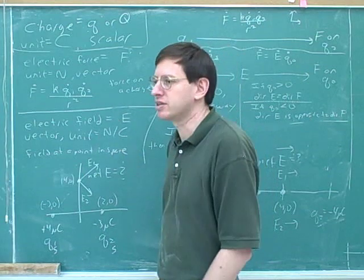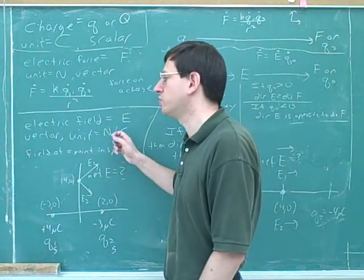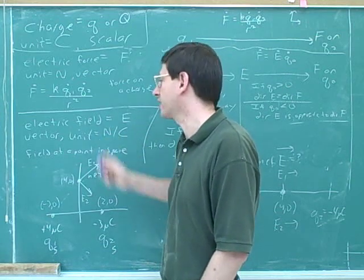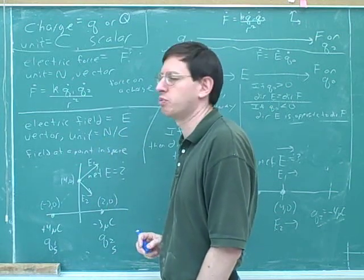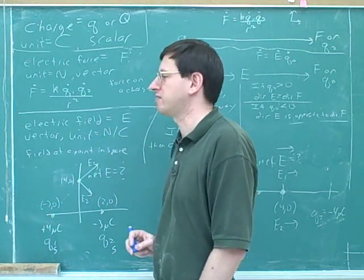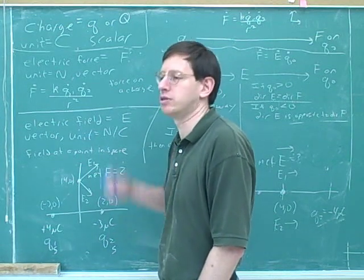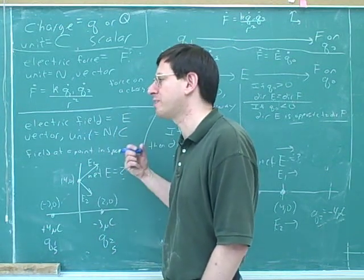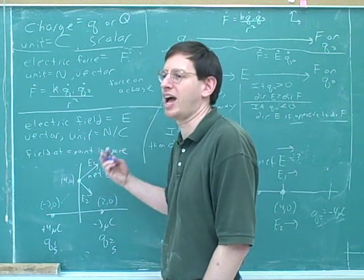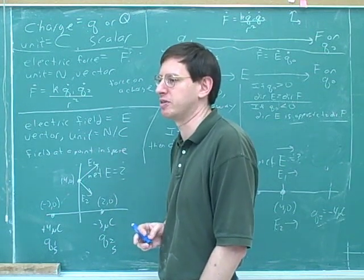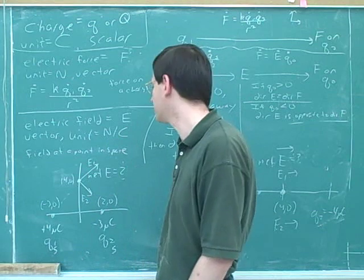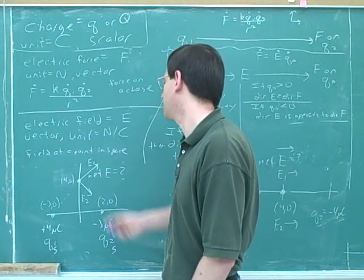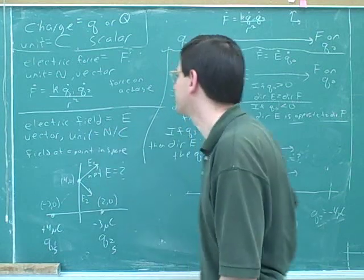The electric field tells you what the force would be on a one-coulomb charge — that would be a good thing to have in your notes. That makes it very easy to figure out what the force is on a two-coulomb or three-coulomb charge. Just like the price of apples tells you how much it would cost to buy one apple, which makes it easy to figure out the cost of two or three apples. But it's just hypothetical — just like you might not buy any apples, you might not actually put a test charge at a point in space.